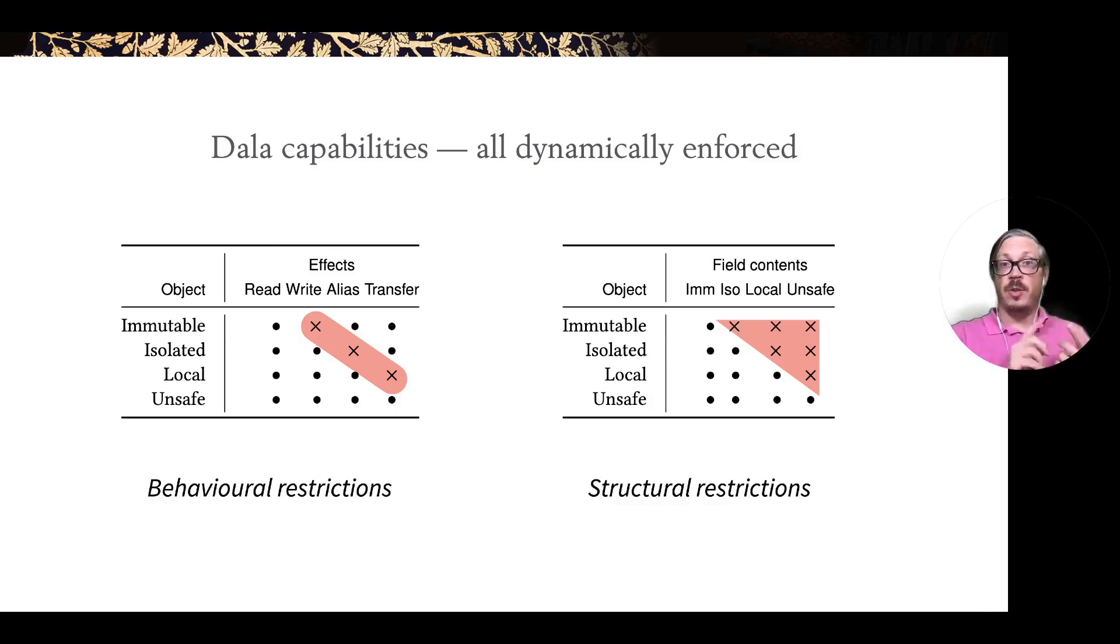If you have an isolated object, you can read it, write it, transfer it, but not alias it. If you have a local object, you can read, write it and alias it, but not transfer it. And if you have an unsafe object, then you can do everything. Strictly speaking, the unsafe objects aren't created with a capability - that's basically just a way to treat everything uniformly in this system. Technically, we have just three capabilities: immutable, isolated and local, or imm, iso and local as we call them in code.